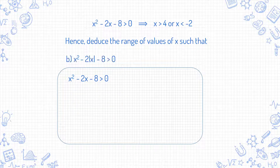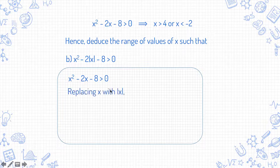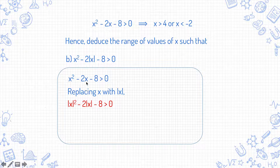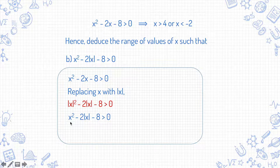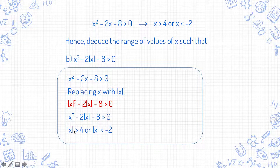Now let's look at example b. The only difference between this and the original is that there is a |x| here, so we are replacing x with |x|, which gives |x|²-2|x|-8>0. And |x|² equals x², which is the expression that we need here. So the solution is given by |x|>4 or |x|<-2.